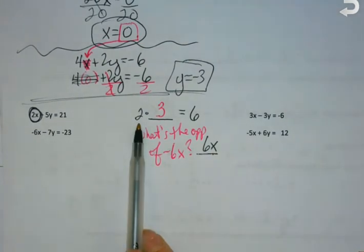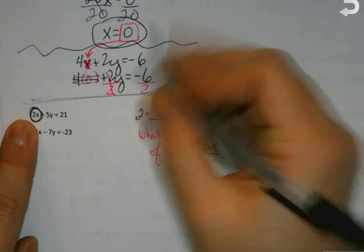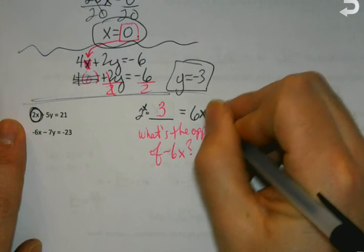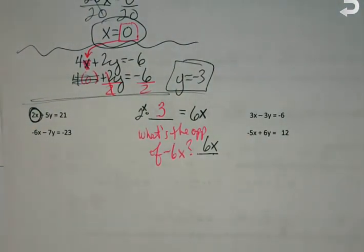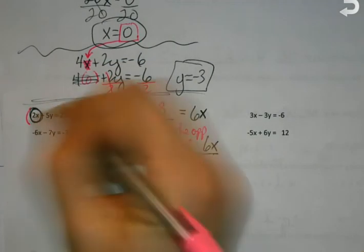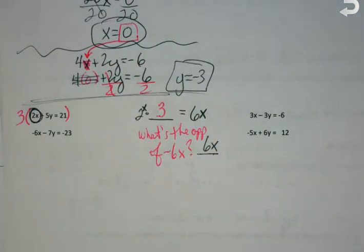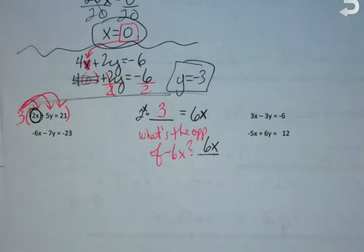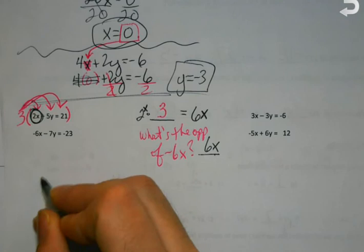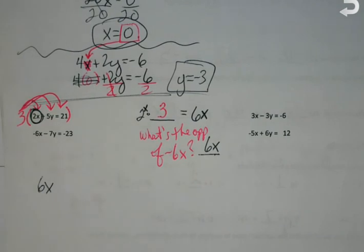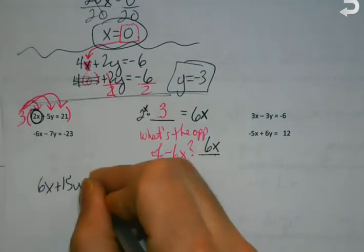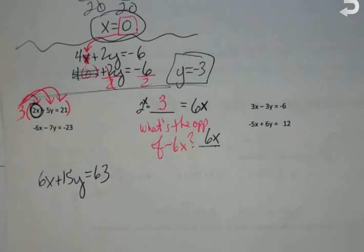So, what I'm going to do, I'm going to multiply this equation by 3. The whole thing. I'm going to do it every last part. So, when I do that, I've got 6x. 3 times 5 is 15. Ooh, now we're getting big. 3 times 21 is 63. But I leave the other one alone.